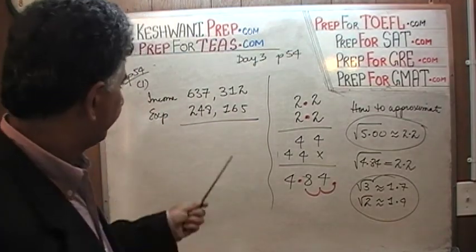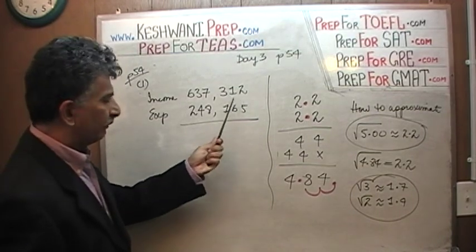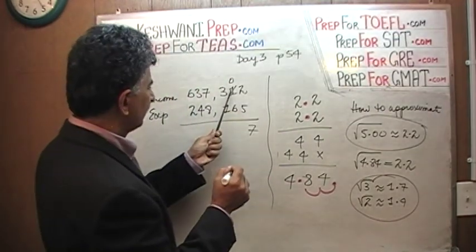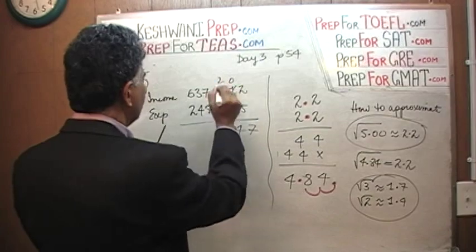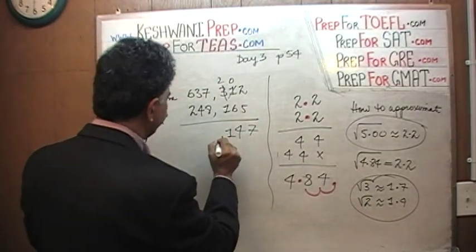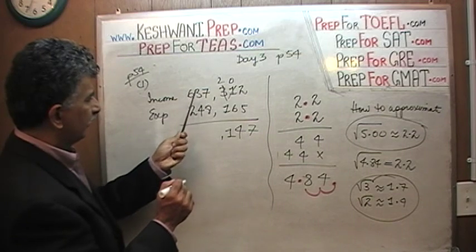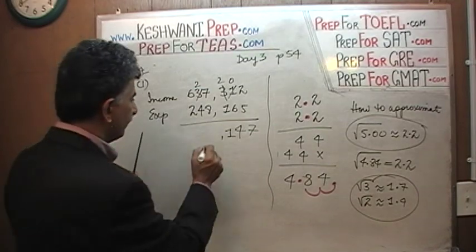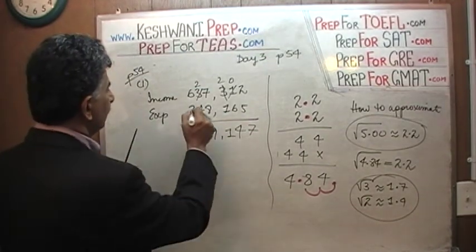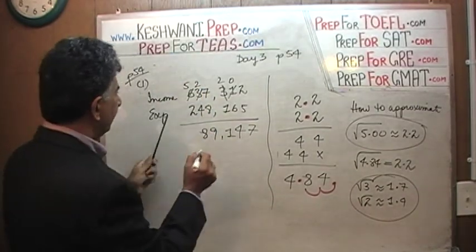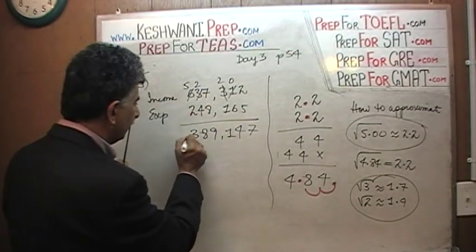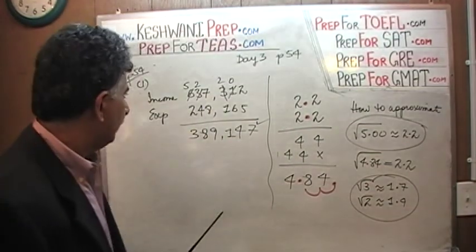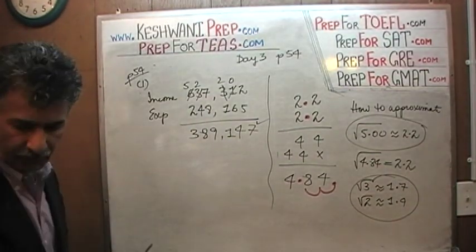Enough of the sermon. Let's calculate: 12 minus 5 is 7; borrow 1, 10 minus 6 is 4; 2 minus 1 is 1; borrow to subtract 8 from 7, giving 17 minus 8 which is 9; 12 minus 4 is 8; and 6 became 5, so 5 minus 2 is 3. The answer is 389,147.